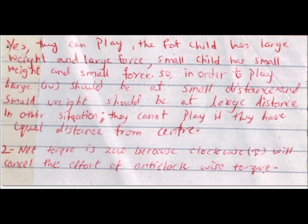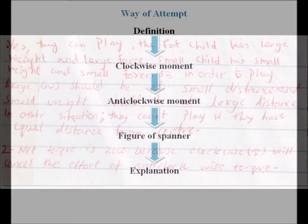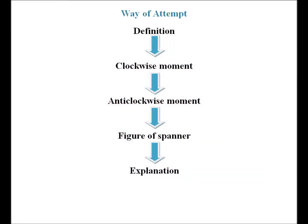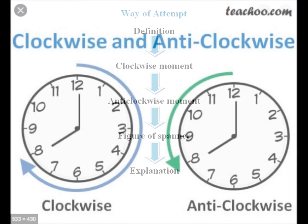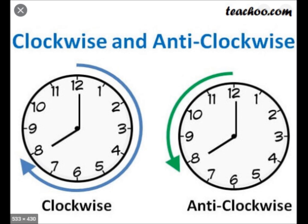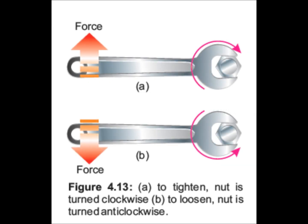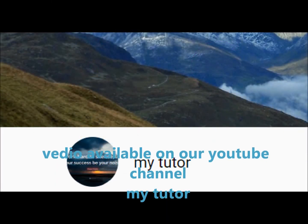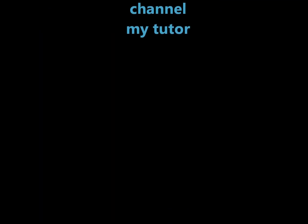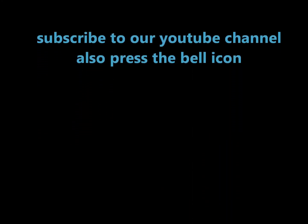To summarize the principle of moments: clockwise moment is in the direction of the clock and anticlockwise moment is opposite. The principle of moments means that when the sum of clockwise and anticlockwise moments cancel each other they are balanced. In the spanner example, tightening the nut is clockwise and loosening it is anticlockwise. When their effects cancel, that is the principle of moments.